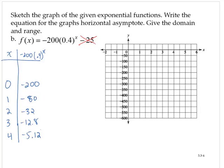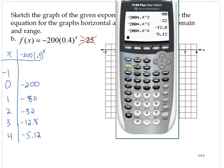And so these values are getting closer to 0. And let's do one more. How about a negative 1? Negative 200 times 0.4 to the negative first power. So that's negative 500.